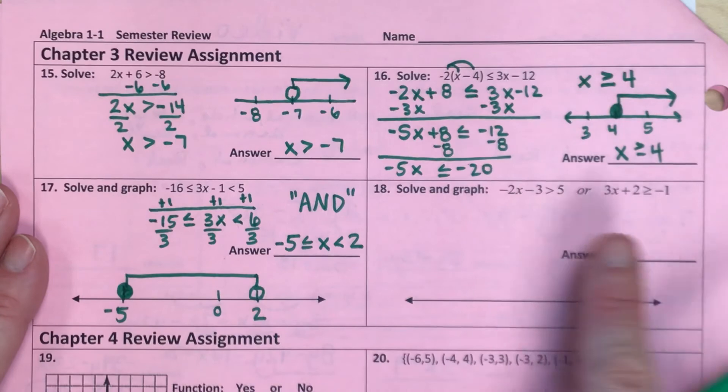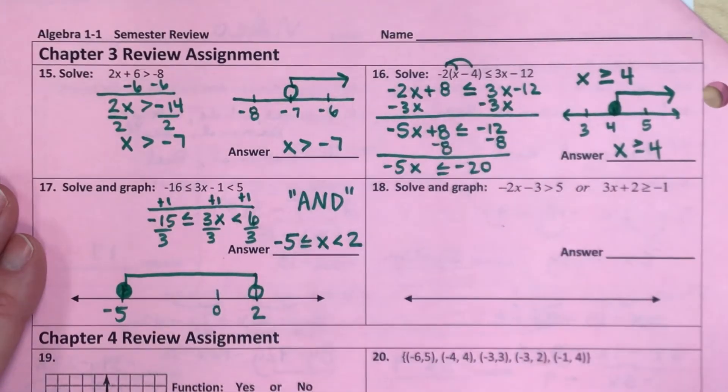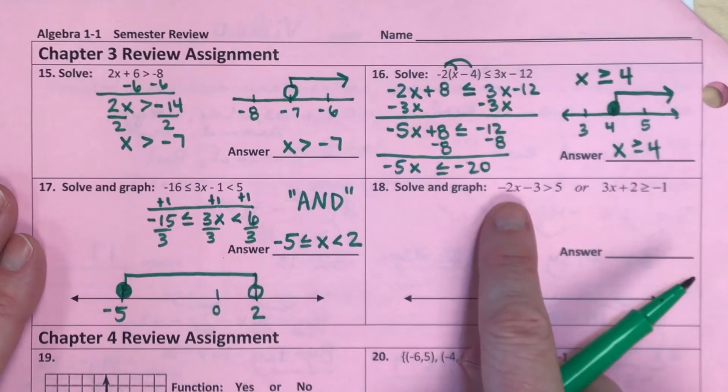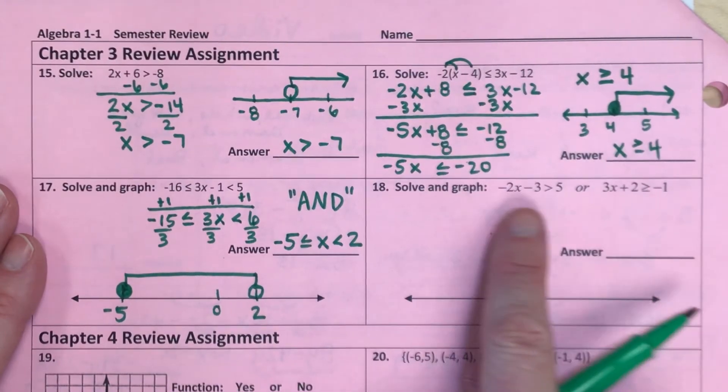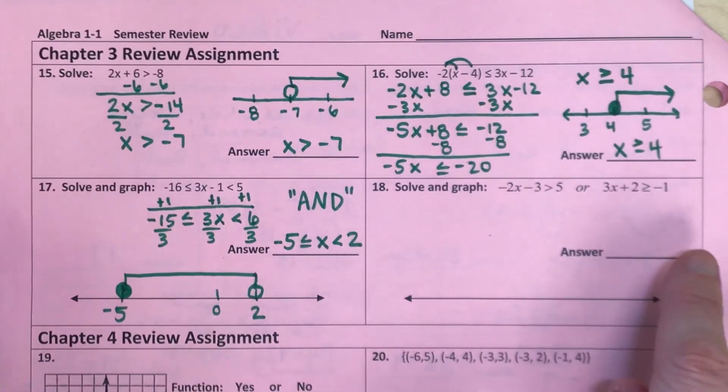For number 18, we're going to solve this or compound inequality just separately. So solve this inequality, graph it, solve this inequality, graph it. And generally, your or problems are going to be shading outside, kind of like ors on a boat.